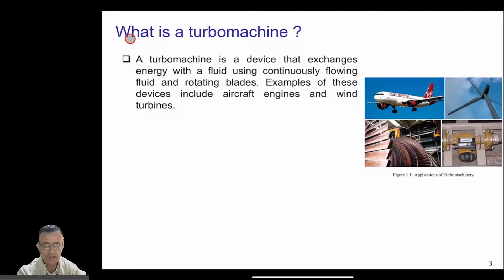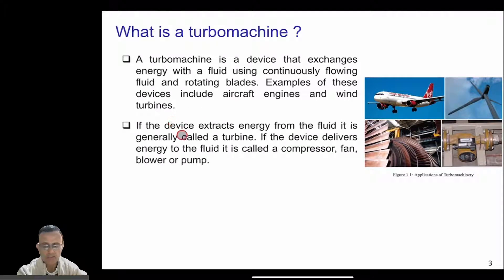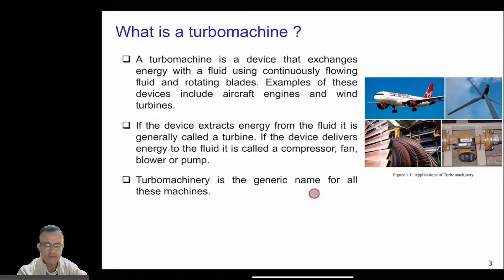A turbo machine is a device that exchanges energy with a fluid using a continuously flowing fluid and rotating blades. Examples include aircraft engines and wind turbines. If the device extracts energy from the fluid it is called a turbine, and if it delivers energy to the fluid it is called a compressor, fan, blower, or pump. Turbo machinery is the generic name for all these machines.